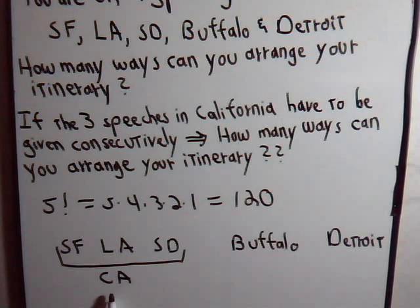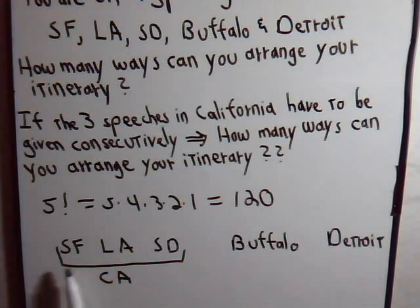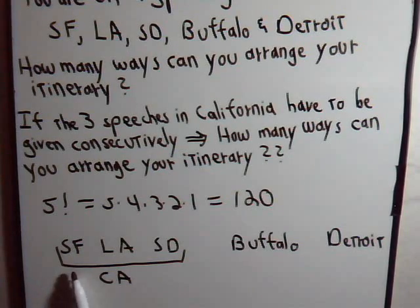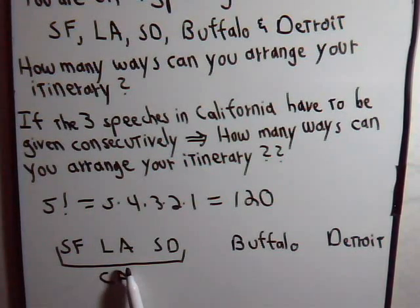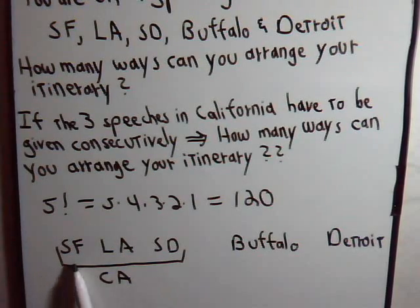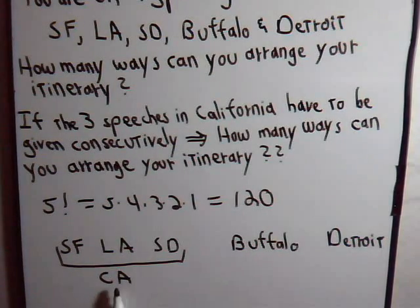Once we're in California, we can choose those cities in any order we want. But we can't do a speech there, then go to Buffalo, then come back to California, then maybe go to Detroit. Once we're in California, we'll cover all the California cities consecutively. So let's think about the California part of the trip.